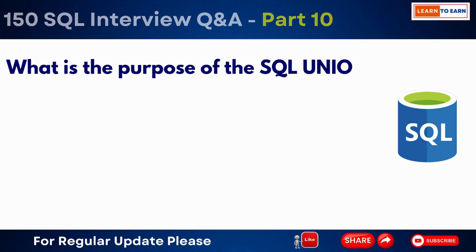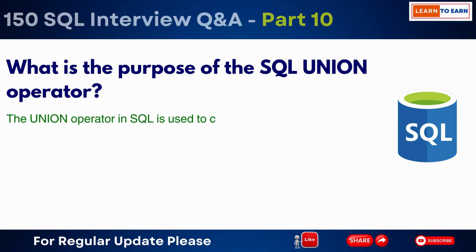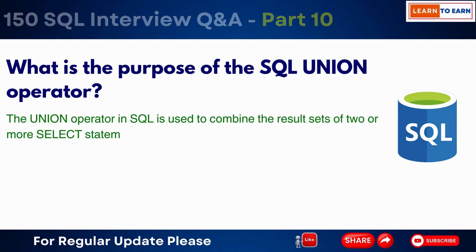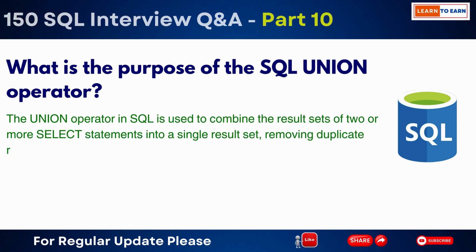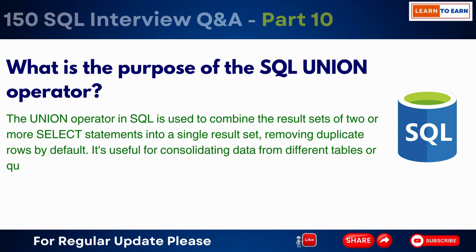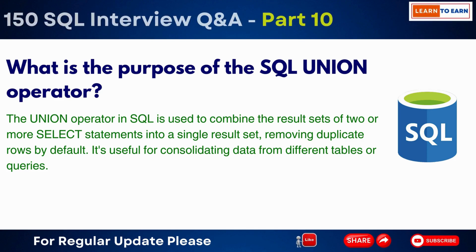What is the purpose of the SQL UNION operator? The UNION operator in SQL is used to combine the result sets of two or more SELECT statements into a single result set, removing duplicate rows by default. It is useful for consolidating data from different tables or queries.